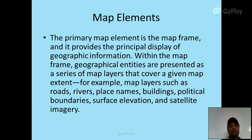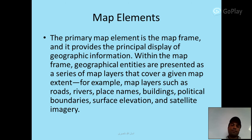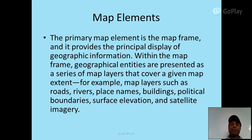Map Elements: the primary map element is the map frame, which provides the principal display of geographic information. Geographical entities are presented as a series of map layers that cover a given map extent. For example, map layers such as roads, rivers, place names, buildings, political boundaries, surface elevation, and satellite imagery.